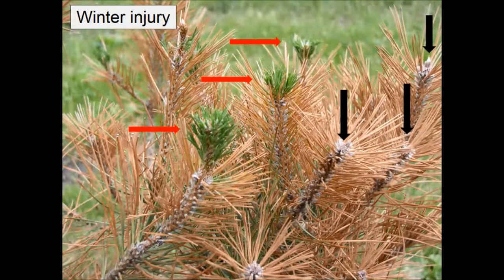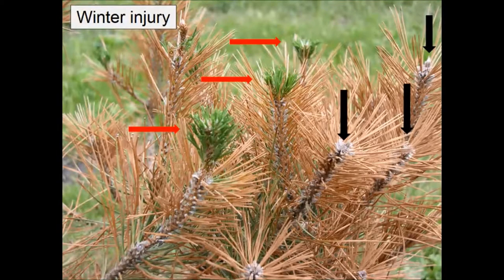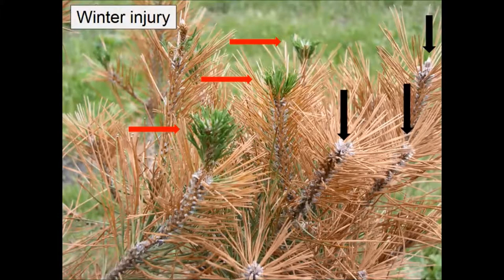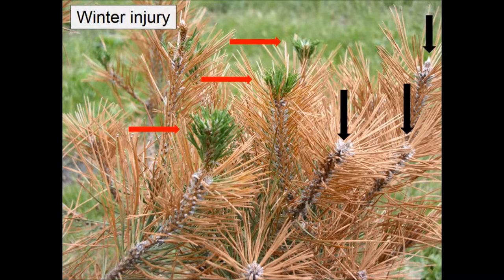About the only thing you can do for winter injury after the fact is wait it out. Where the red arrows are, new growth is coming — the buds were not killed, only the needles. Where the black arrows are, those buds are not growing; chances are they did die. Before the fact, watering from about mid-September until freeze-up is what you can do to minimize winter injury. Having trees go into winter well-hydrated is about the best prevention. For little shrubs you could use burlap or similar material to block wind and winter sun, but for big trees that's not feasible.